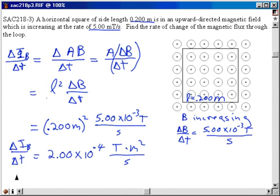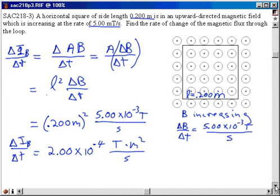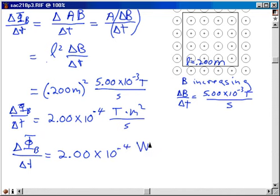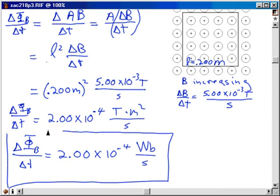So I'll go ahead and write that down. In terms of the units of flux, delta phi sub B over delta T is equal to 2.00 times 10 to the minus 4 Webers per second, where the Weber is the SI unit for flux.